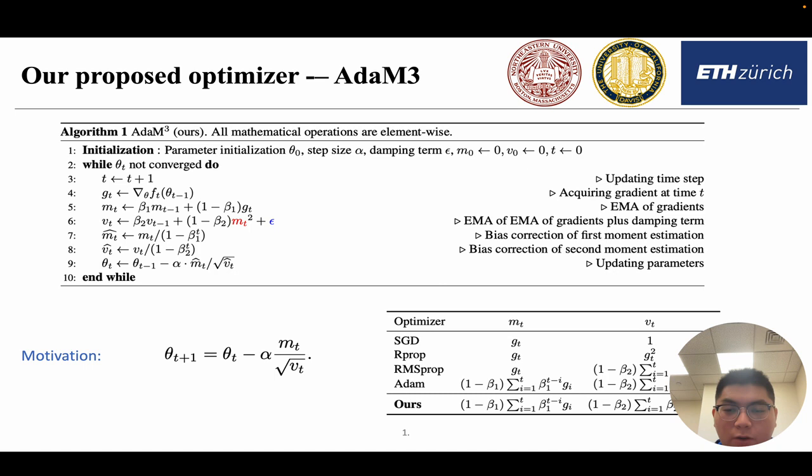So we argue that we should also do it in the same way when we choose the value of v_t. We propose to replace the g_t square in the v_t in the Adam formulation into m_i square, because m_t is a more favorable choice for gradient representation than g_t.